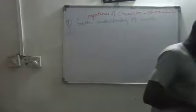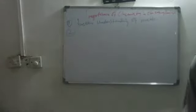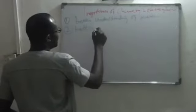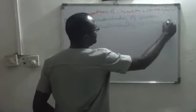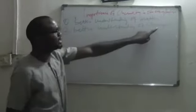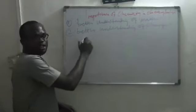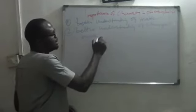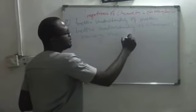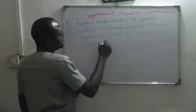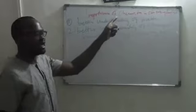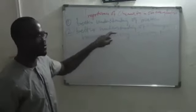Number two: chemistry gives you a better understanding of changes that happen in the environment. In chemistry you understand changes more — examples include burning, rusting, souring, and food production. Knowledge of chemistry enables you to understand how burning happens, how rusting happens, how souring happens, and how food is manufactured.